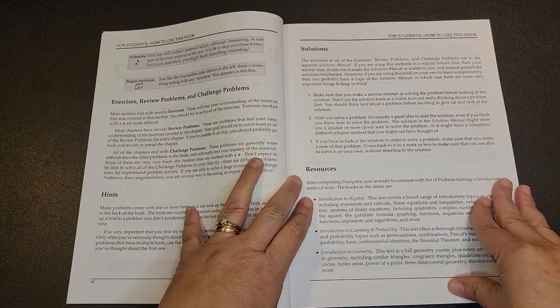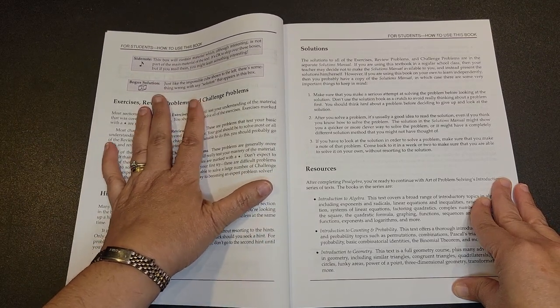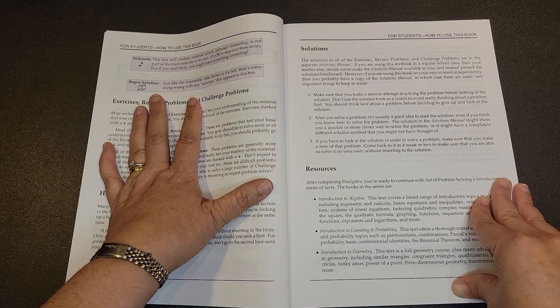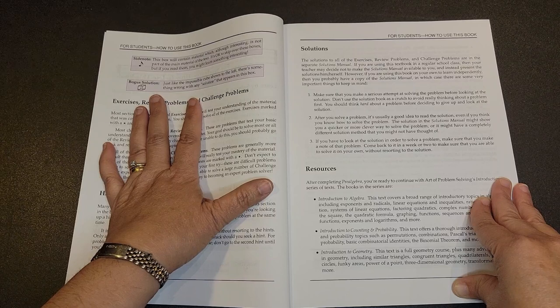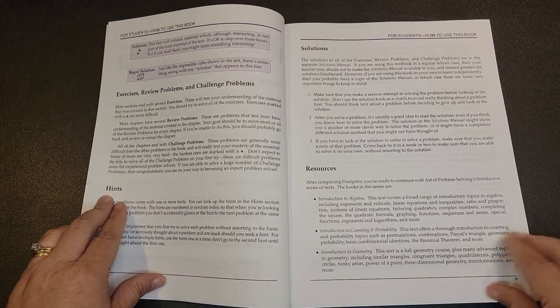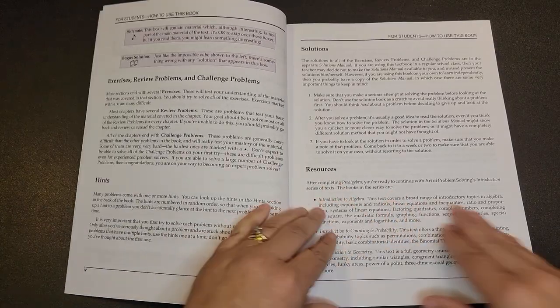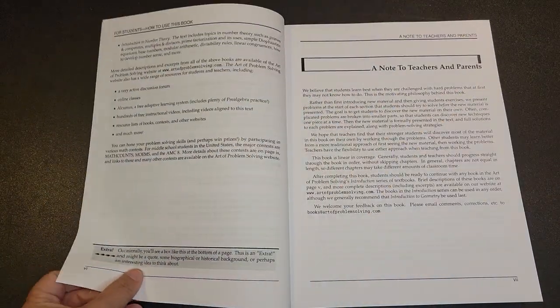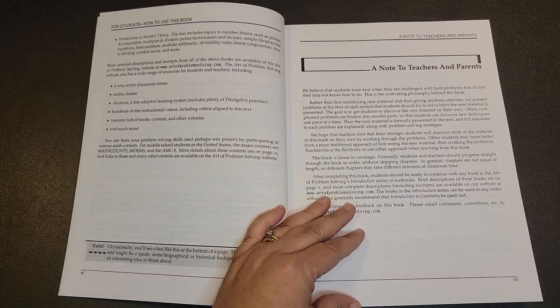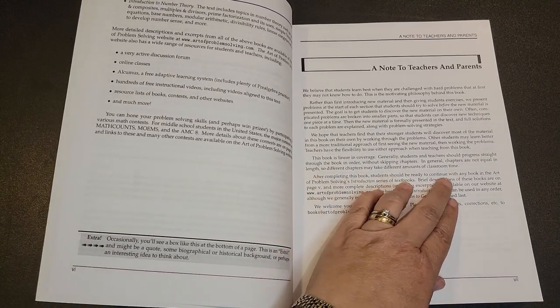Sometimes these concepts are things that they've just never been exposed to before. They have what they call 'bogus solutions,' which I really like, because this will show that something's wrong with any solution that appears in this box. There's also hints, and the solutions are included in this solutions manual. They do recommend that you go straight through the book because it is linear in nature. They do not want you skipping around.